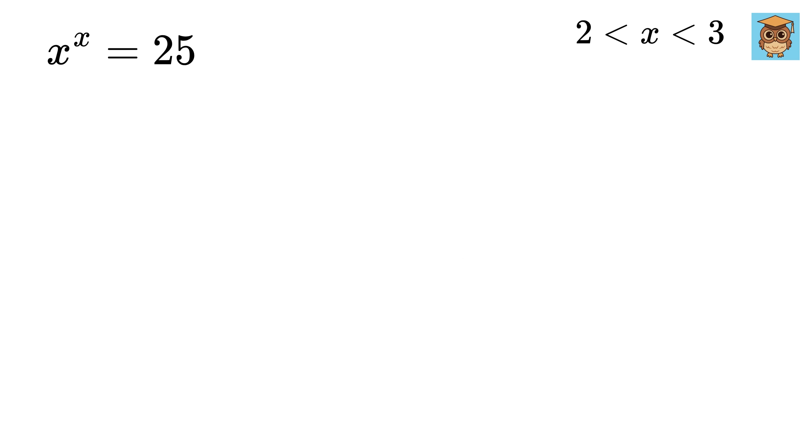Now let us try to solve it using algebra. First let us apply natural log on both sides. This gives us log of x raised to x equals log of 25. Now using the power rule of logarithms, we can rewrite this as x times log of x equals log of 25.